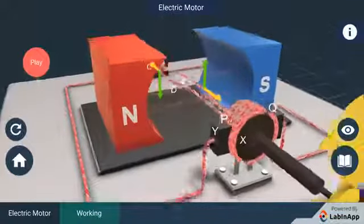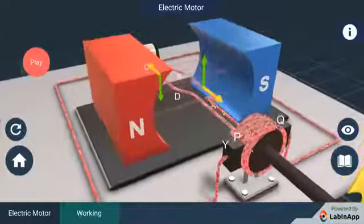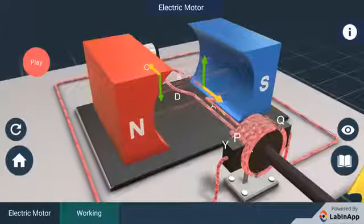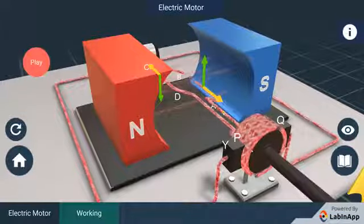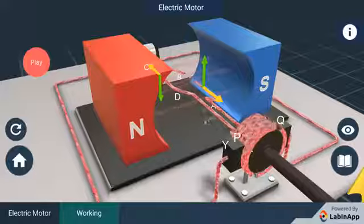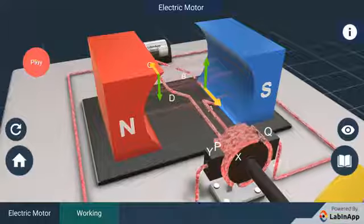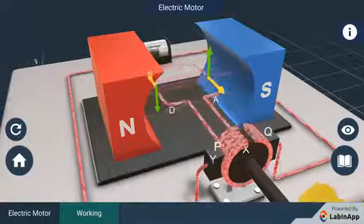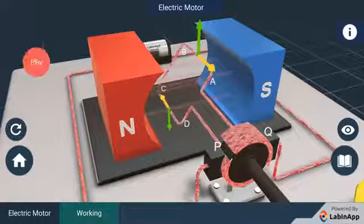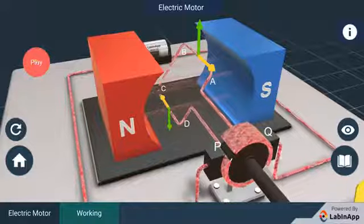The reversal of current also reverses the direction of the force acting on the two arms AB and CD. Thus, the arm AB of the coil that was earlier pushed down is now pushed up and the arm CD, previously pushed up, is now pushed down.